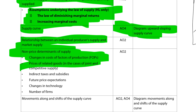Price of related goods in supply includes joint supply and competitive supply. Joint supply refers to goods produced together — like leather and beef from cows. If the price of leather increases, farmers produce more leather, and since beef and leather are in joint supply, the supply of beef also increases. Competitive supply refers to goods where producing one means giving up the other — like rice and corn on the same crop. If the price of rice increases, farmers switch to rice, increasing quantity supplied of rice, which means the supply of corn decreases.